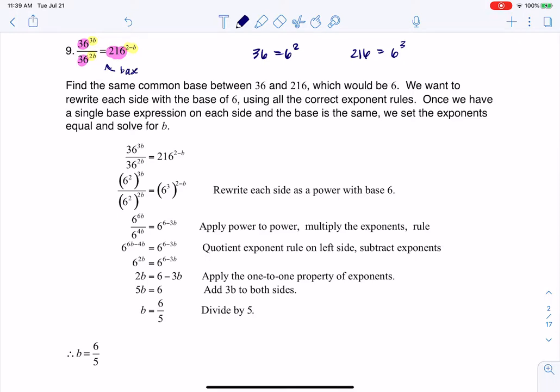right? I can see that this is base 6, so I want to rework this exponential equation. Let's go ahead and get everything in the same base, and that's what you're going to see me doing here. So you see me rewriting 36 as 6 squared, and 216 as 6 cubed.